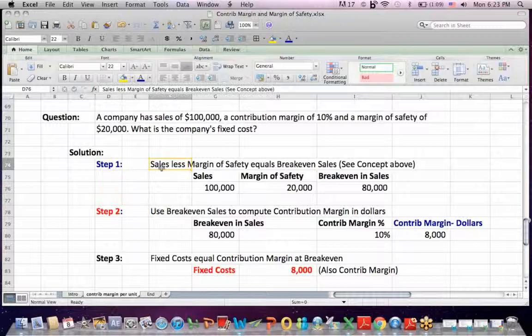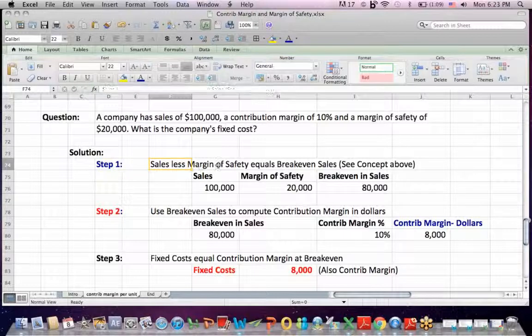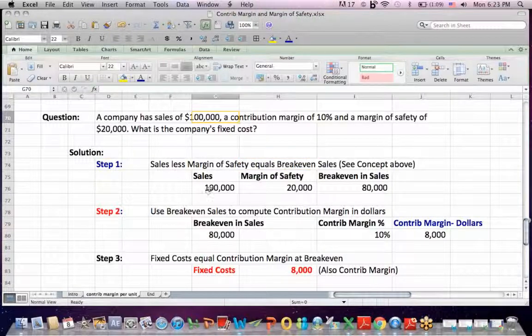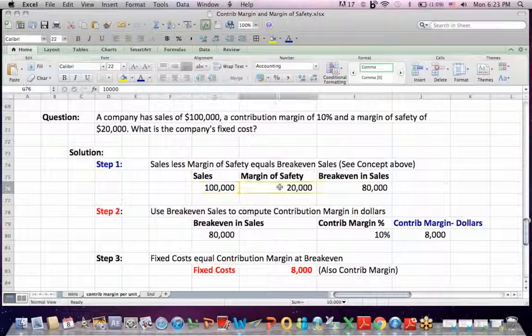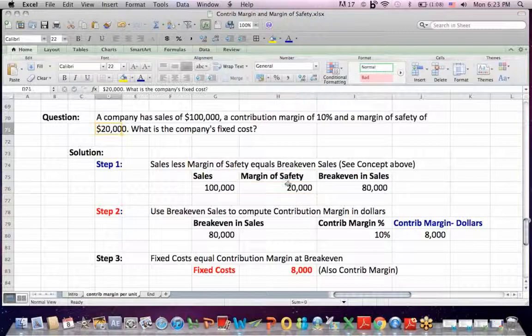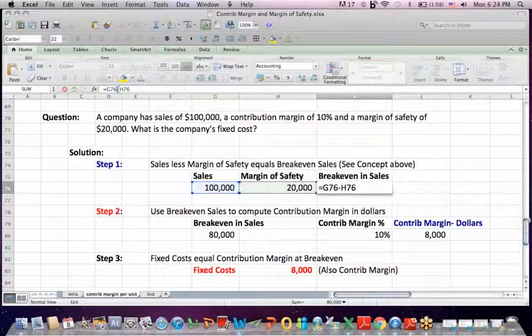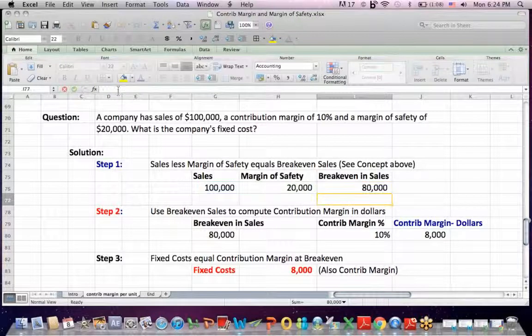Step one, sales less margin of safety should equal your break even sales, because the margin of safety is your cushion above break even. So if my sales are 100,000, and my margin of safety is $20,000, then my break even in sales total dollars must be 80,000, 100,000 minus 20,000.